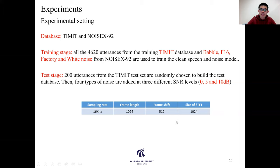During the test stage, we are using the TIMIT test set and randomly choosing 200 utterances to conduct the speech enhancement. And four types of noise are added at three different SNR levels. And this is the details of some settings: sampling rate, frame length, frame shift, and the size of STFT.